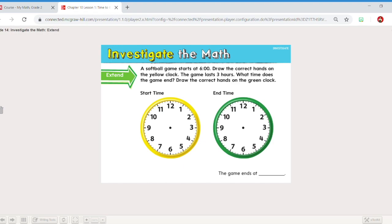If we're going to extend this and continue to practice, we want to look at this question. A softball game starts at six o'clock. Draw the correct hands on the yellow clock. The game lasts three hours. What time does the game end? Draw the correct hands on the green clock. I like this question because this is a way that we would use time in our day-to-day lives. You have a softball game. It starts at a certain time. We know it starts at six. So our hour hand very carefully pointing to the six and our minute hand pointing to the twelve.